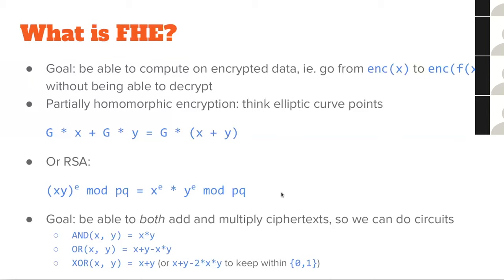The question is: can we come up with a scheme that lets us do both — adding and multiplying on ciphertexts? If you can add and multiply, then you basically have general-purpose computation. If you restrict your ciphertexts to just zeros and ones, you can do pretty much every logic gate. For AND: AND(x, y) is just x * y.